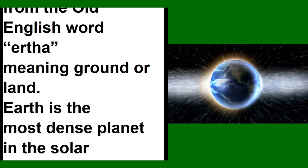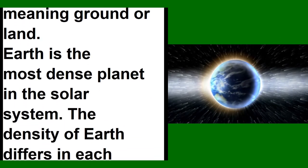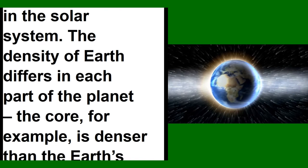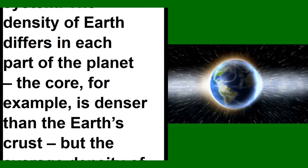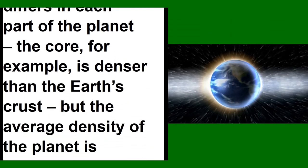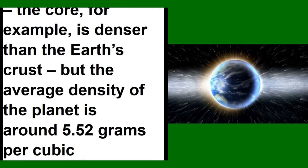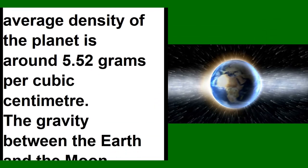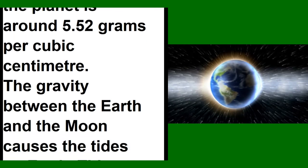The word Earth comes from the Old English word meaning ground or land. Earth is the most dense planet in the solar system. The density differs in each part of the planet. The core, for example, is denser than Earth's crust, but the average density is around 5.52 grams per cubic centimeter.